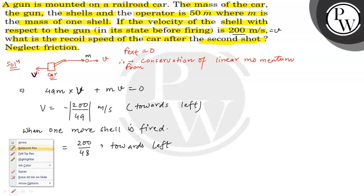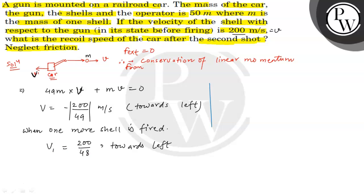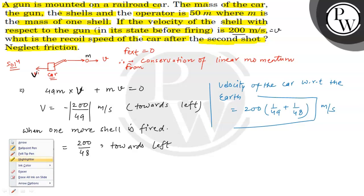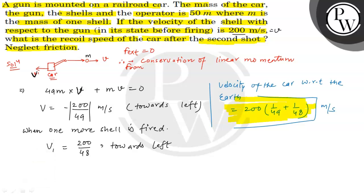यहाँ से जो हमें निकालना था — recoil speed of the car — यानि कि velocity of the car with respect to the earth — यह हो जाएगा 200 times (1/49 + 1/48)। क्योंकि यह इस direction में हो जाएगा, that will be our answer. I hope you understood it well. All the best.